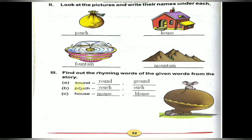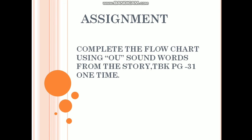Once again: sound, round, ground; pouch, couch, ouch; house, mouse, blouse — understood children. Practice at home. Here is the assignment for you: Complete the flowchart using OU sound words from the story, textbook page 31. Write one time children. We will meet you in the next online classes.